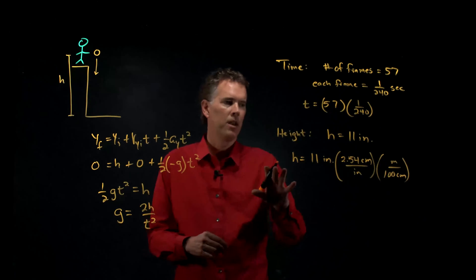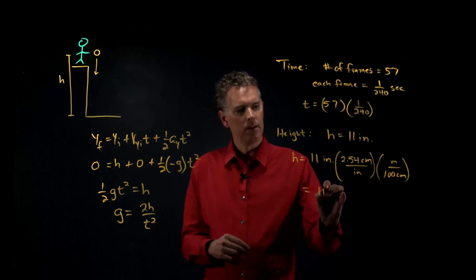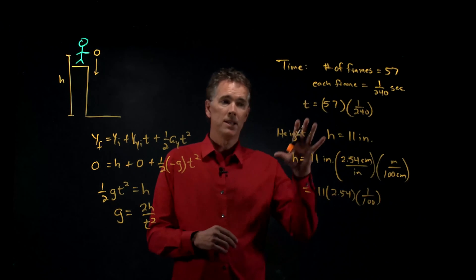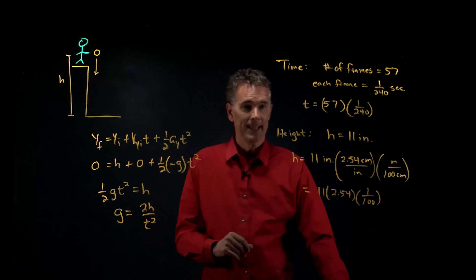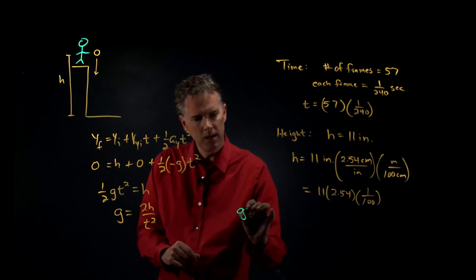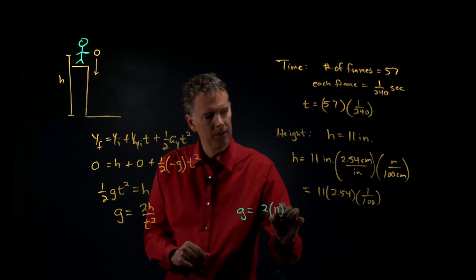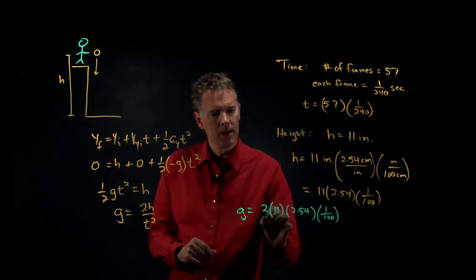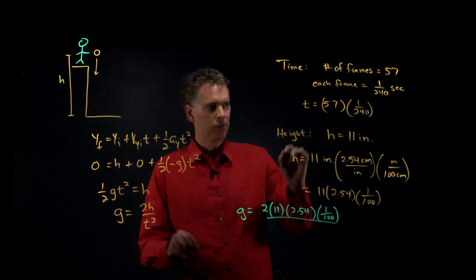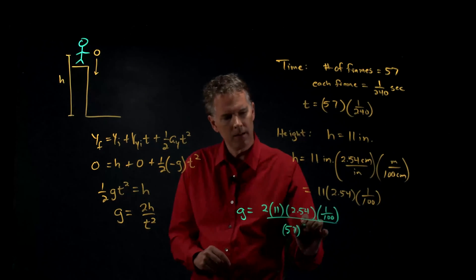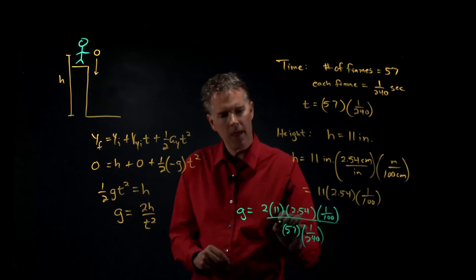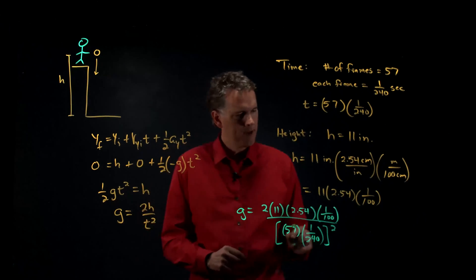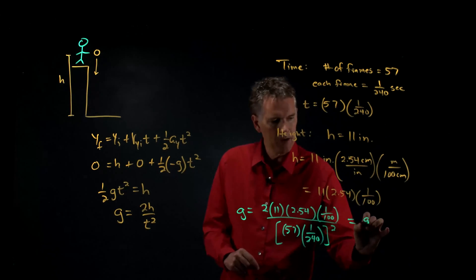And so now we have h. H is equal to 11 times 2.54 times 1 over 100. And now we can take all this information and we can plug it back in for g and let's see what we get. We get g is equal to 2 times 11 times 2.54 times 1 over 100. And then we're going to divide by t squared, which is 57 times 1 over 240. That whole thing is squared. Plug this into your calculator and tell me what you get. I tried it and I got 9.9.